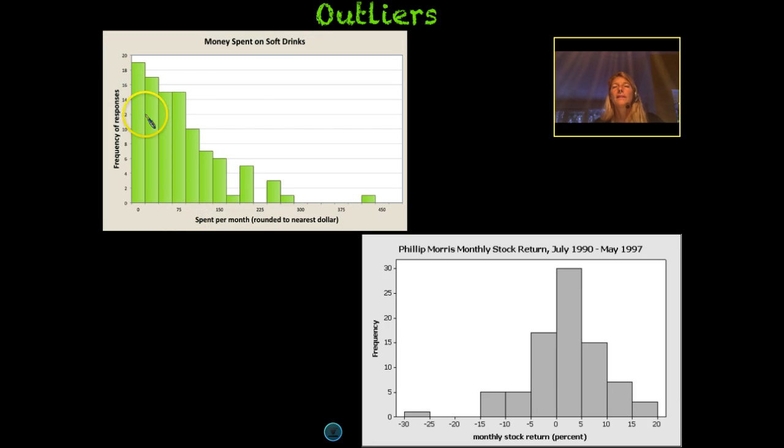So if I'm looking at this data on the top, this is a histogram of money spent on drinks. So here we have our intervals. And this is the amount of money rounded to the nearest dollar. And then always again on histograms, the left side is the frequency, how many people spent this much money.